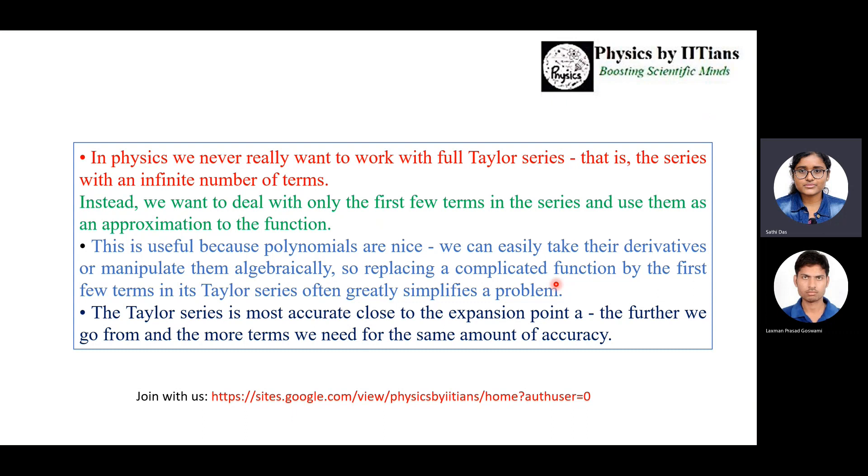The Taylor series is most accurate close to the expansion point a. As further we go, more terms are needed for the most accurate function. That's why we add extra more terms to get the closest accurate value. To achieve the most accuracy, we need to add more terms in the Taylor series. But if you want to get a simplification or want to have a complicated function in a simple form, then two or three terms of a Taylor series is great for us.